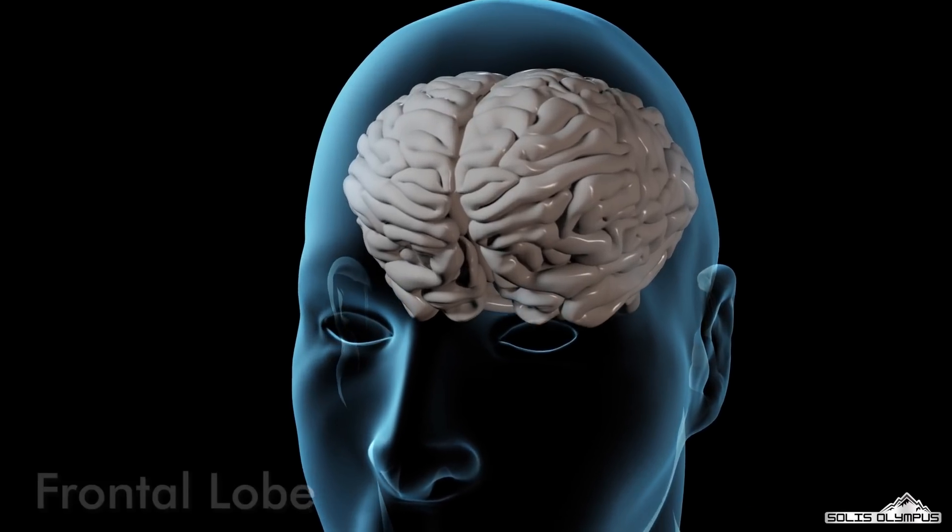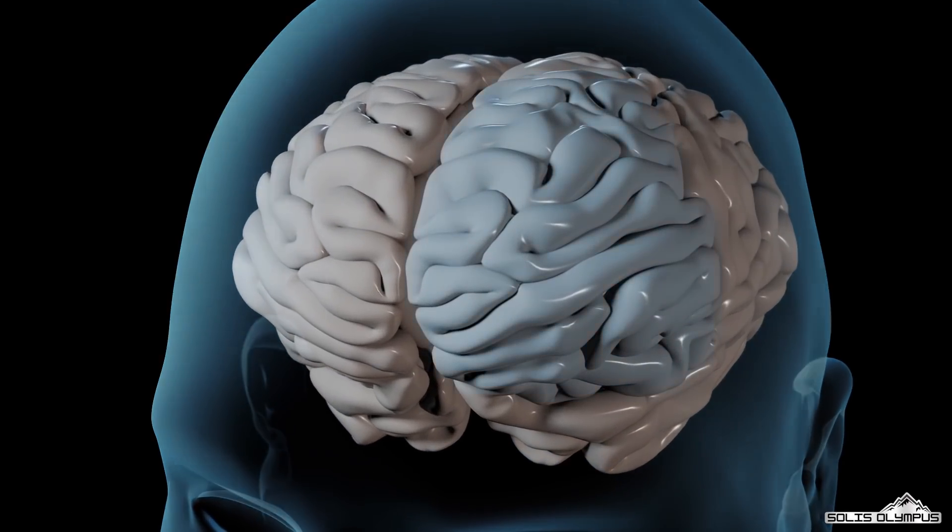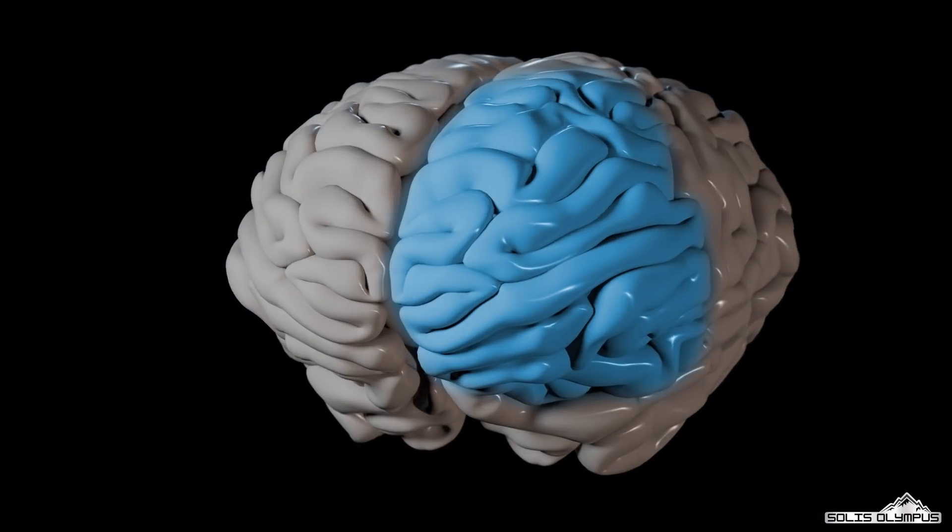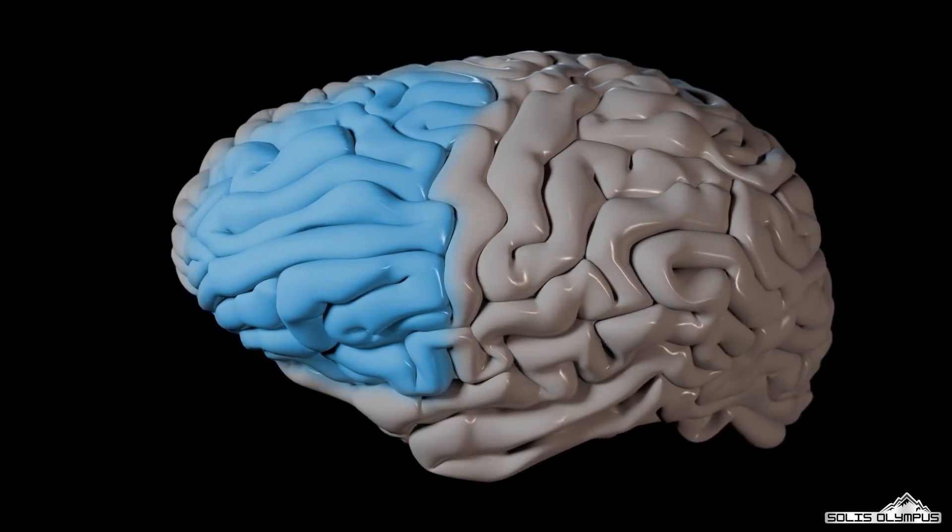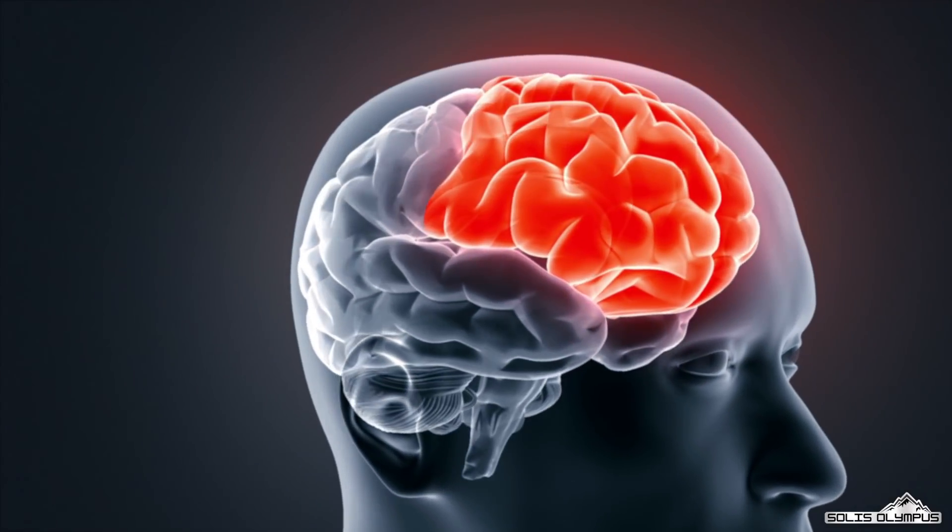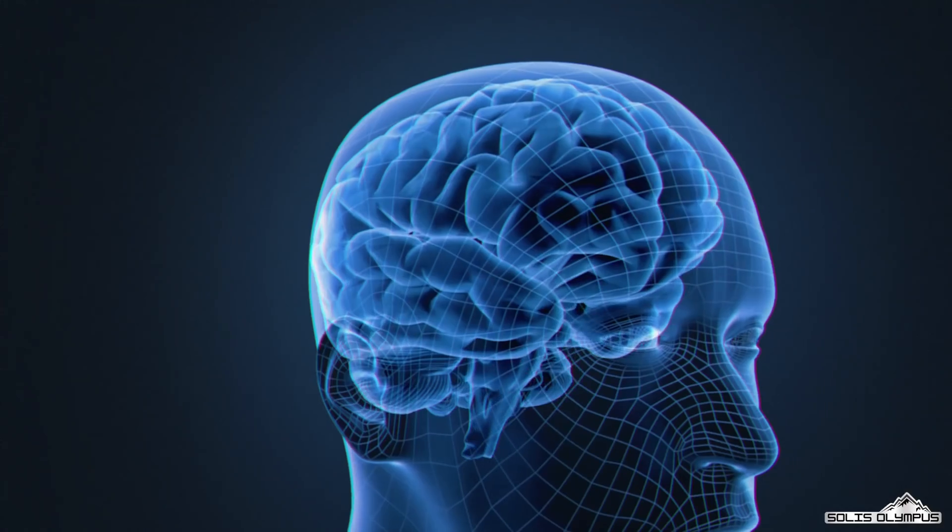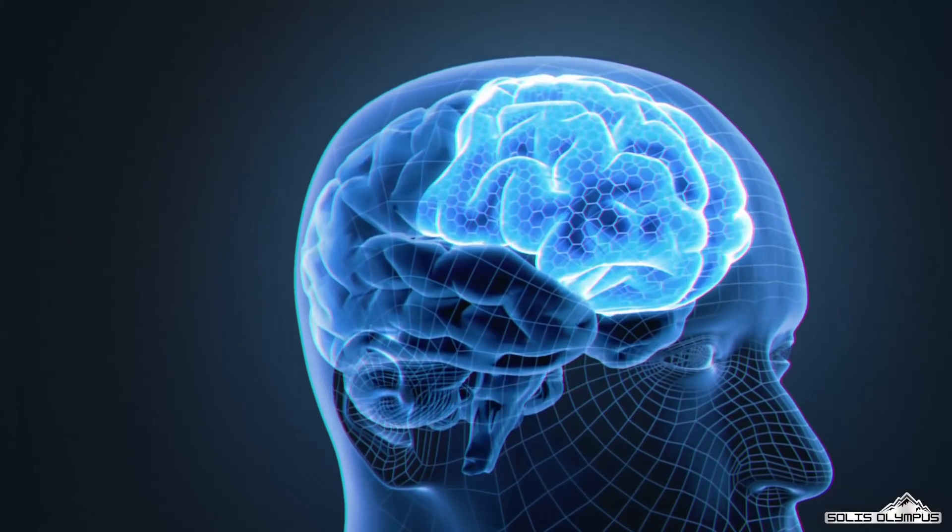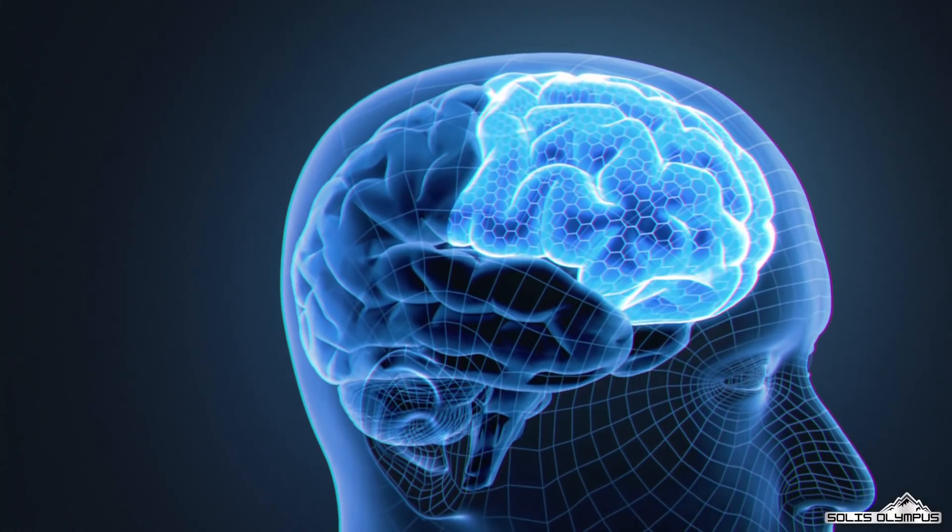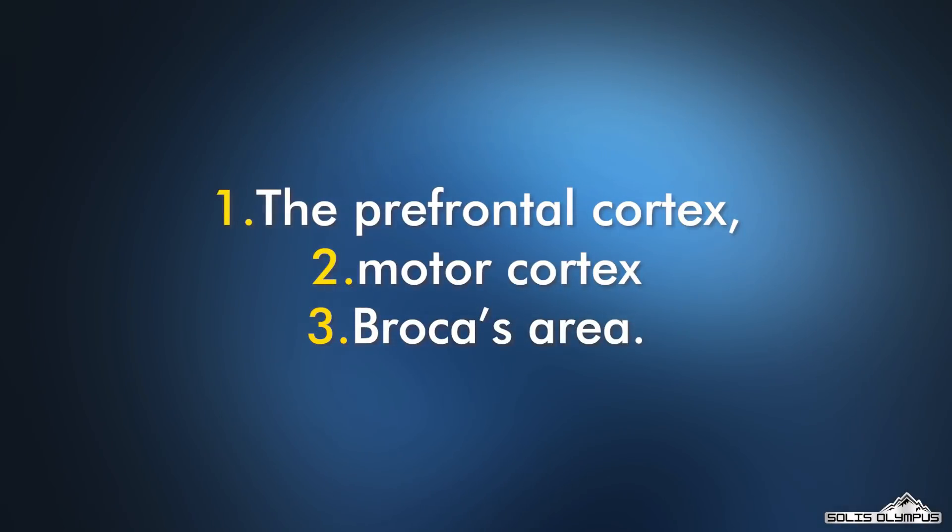Frontal lobe. The frontal lobe is the largest lobe of the brain, located in the front of the head. It is separated from the parietal lobe by a space called the central fissure, and from the temporal lobe by the lateral fissure. Functionally, the entire frontal cortex of the frontal lobe is divided into three parts: the prefrontal cortex, motor cortex, and Broca's area.